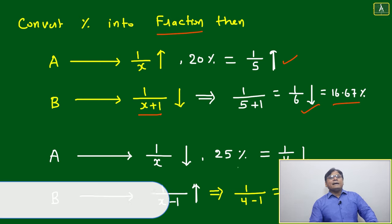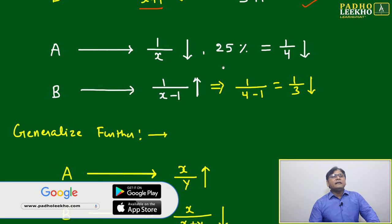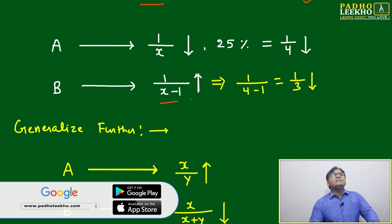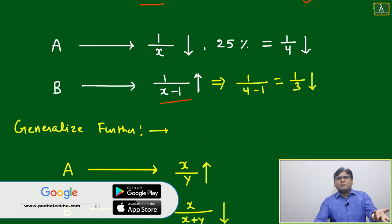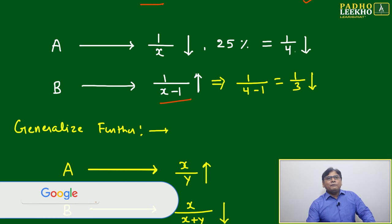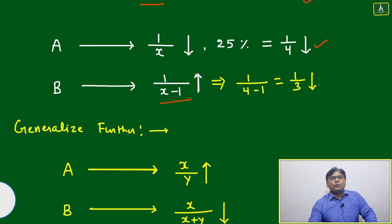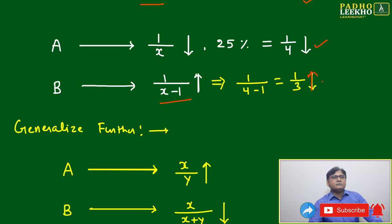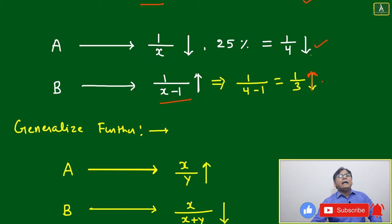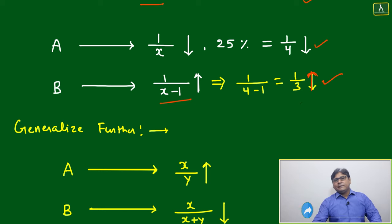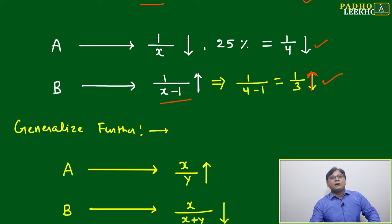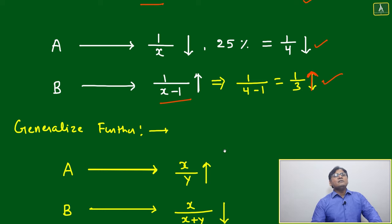If a is decreased by 1/x, then b will increase by 1/(x−1) — just the reverse. For example, 25 percent equals 1/4. Note: if a decreases by 1/4, b will increase by 1/3. The arrow goes up — opposite direction, one is decreasing and one is increasing.